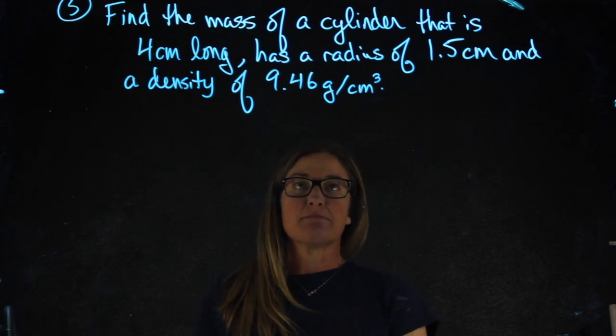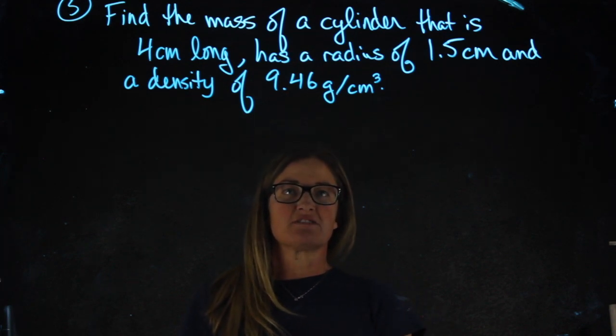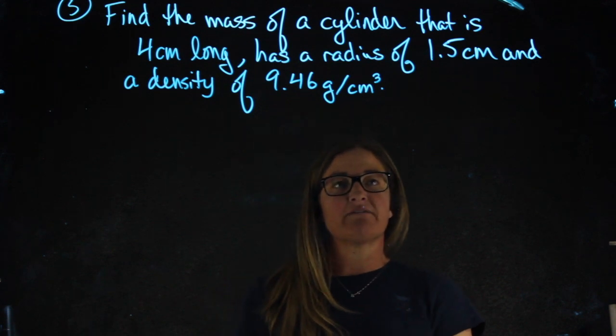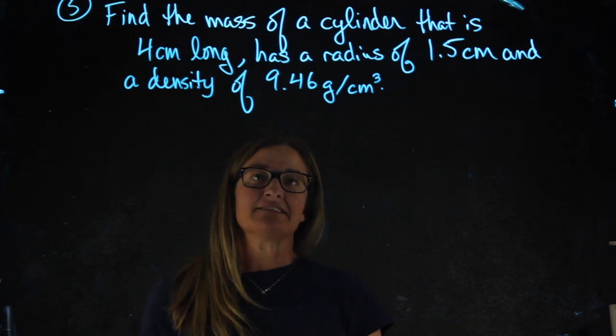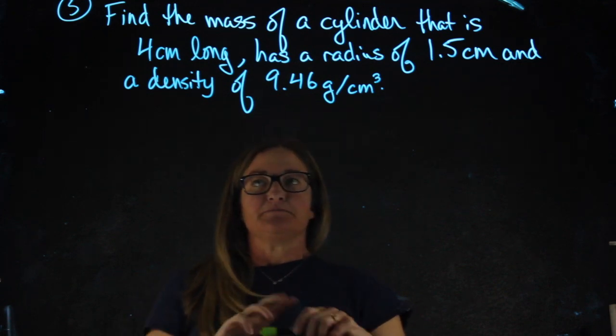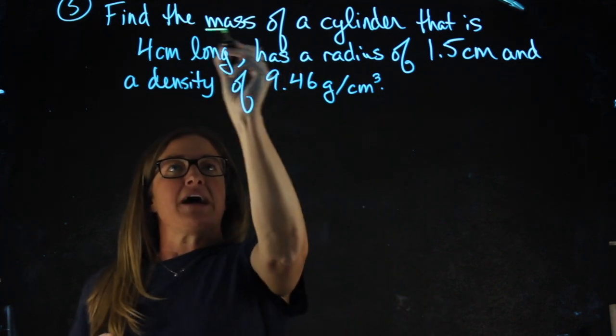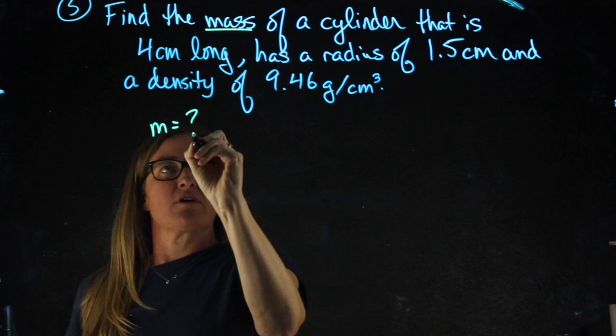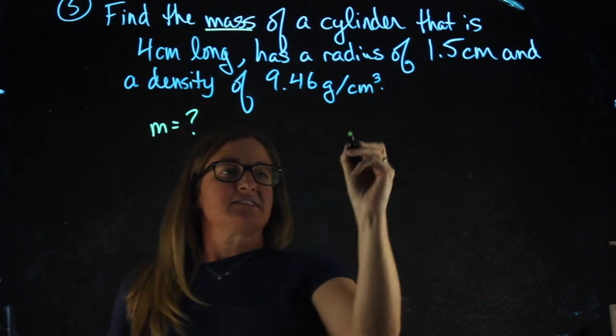Number five. Find the mass of a cylinder that is four centimeters long, has a radius of 1.5 centimeters, and a density of 9.46 grams per centimeter cubed. Find the mass. Mass is what we're looking for. We know that it's a cylinder.